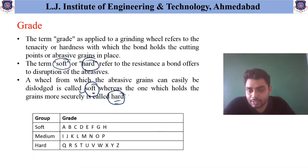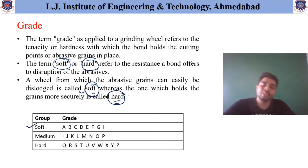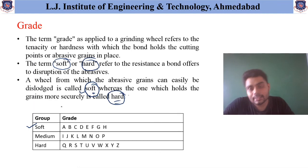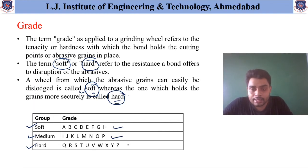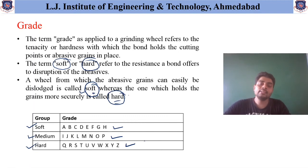To summarize: there is variation in grade indicated by soft, medium, and hard. In normal cases, A to H indicates soft grade, I to P indicates medium grade, and Q to Z indicates hard grade.